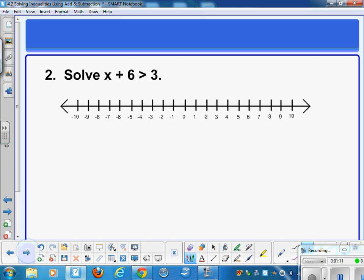Let's try another one. Again, I want to isolate the variable x, and I'm going to do that in this case by subtracting 6 or adding negative 6 to both sides. And I get my solution, x is greater than negative 3.